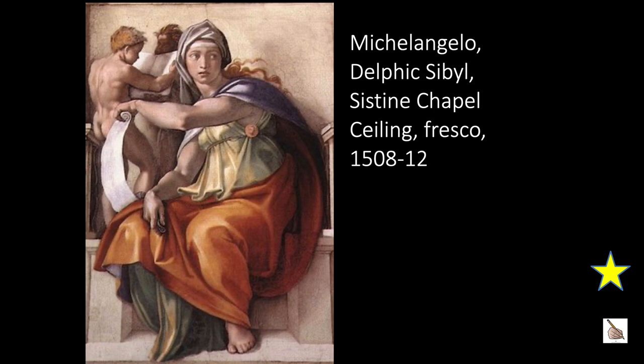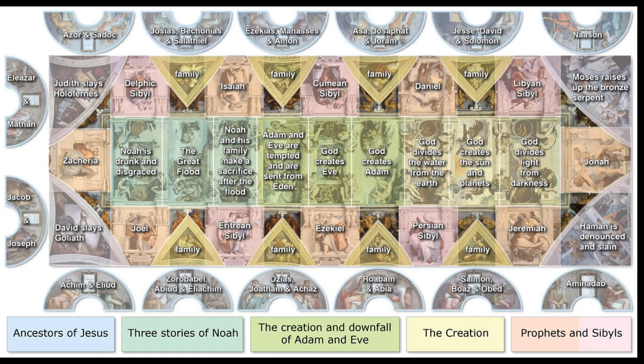One of the figures is the Delphic Sibyl. If you look at the form and the muscles, it can be described as sculpture-esque. They are located between the triangular areas that include the Old Testament prophets and pagan Sibyls. The humanists claim that the Sibyls foretold the coming of a savior.